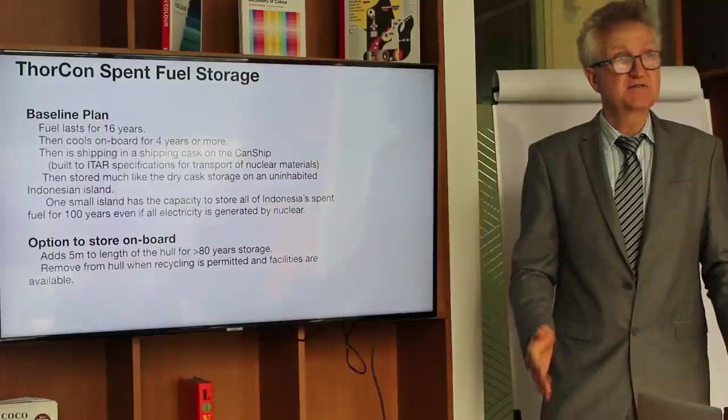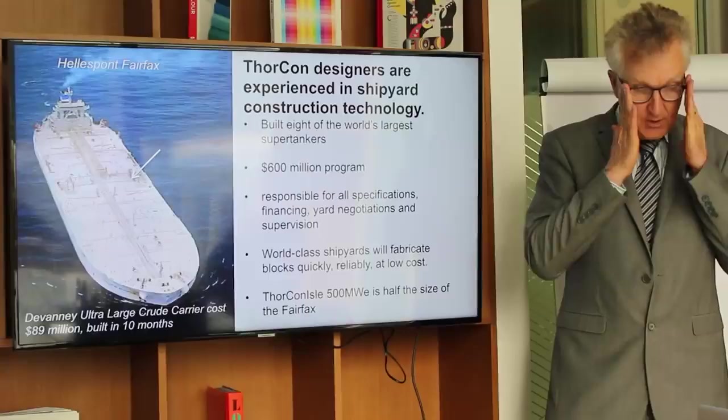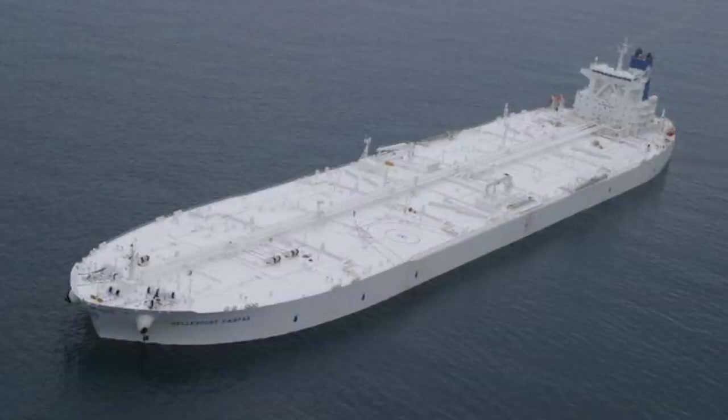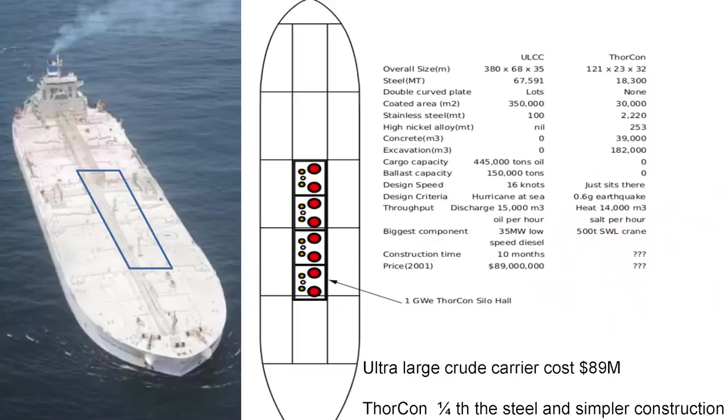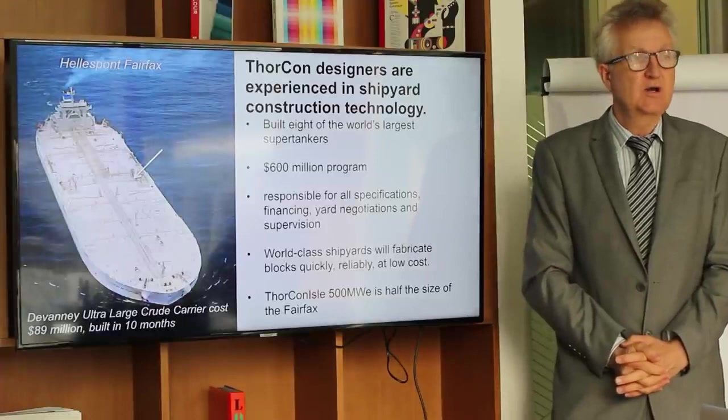Why do we build it like ships? Because that's what we've done before. This is the world's largest double hull oil tanker. Our founder designed it, supervised its building, and operated it. They built four of those, and the last one took less than a year to build. It's about twice the size of one of our power plants. We have experience. We know how to build this. We know how to design to make it suitable for the yard to build. And that would cost $90 million to build. We got an estimate from a shipyard for building 75% of the cost for $350 million, which is in line with our estimates of about a dollar a watt.